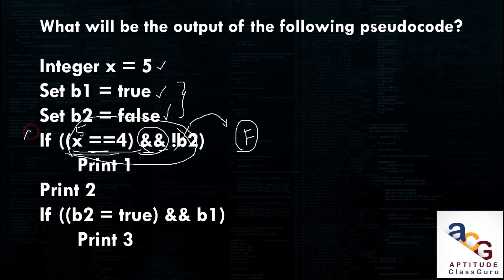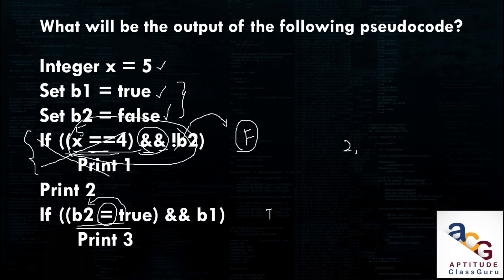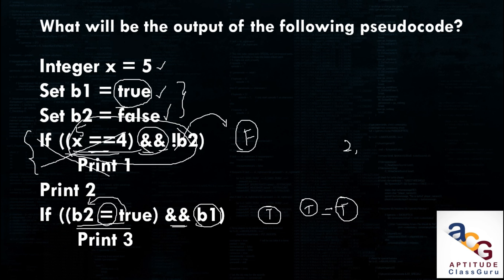Since the if condition is false, the internal statements of the if block will not be executed. Print 1 will not execute, so it will directly print print 2 — output is 2. Next, if b2 = true AND b1: here the single equals is an assignment operator, assigning true to b2. So the expression returns true. b1 is also initialized as true. Both inputs are true, so the AND output is true — the if block executes. Print 3 also executes, giving the final output as 2 and 3.